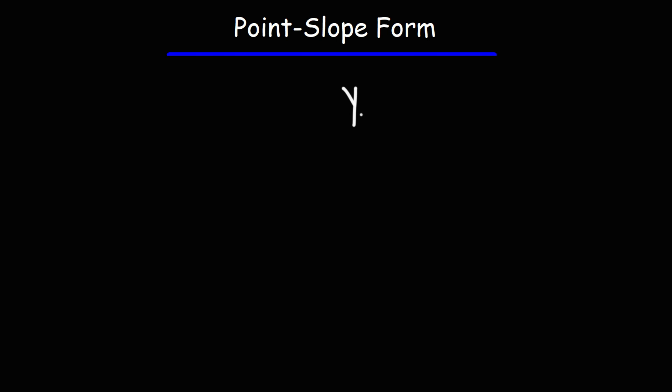The formula for a linear equation in point-slope form is: y minus y1 is equal to m times x minus x1.